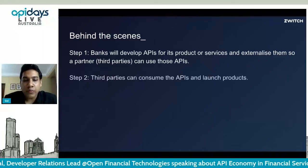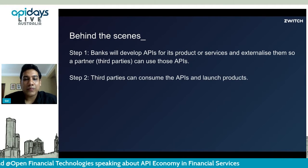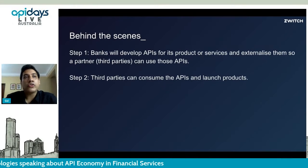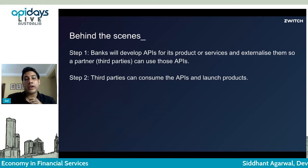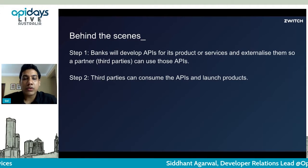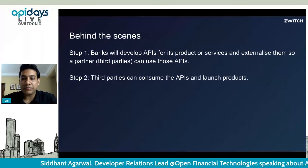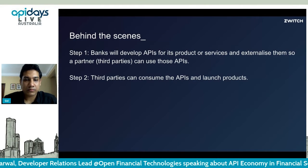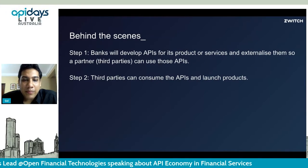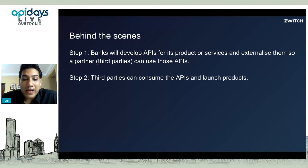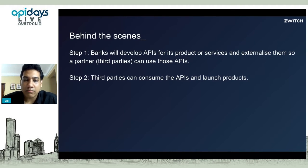As part of step two: once banks expose these APIs, third parties consume them and launch their products — they can launch a new bank or even offer those APIs further to end customers. That's what embedded finance is all about. Merchants can integrate with the banking API directly, but efforts will increase if they want to add multiple banks. Alternatively, a merchant can use a payment aggregator or third-party service provider's API, who in turn has already integrated with multiple banks. It's all interconnected via APIs.